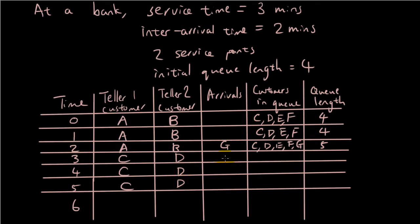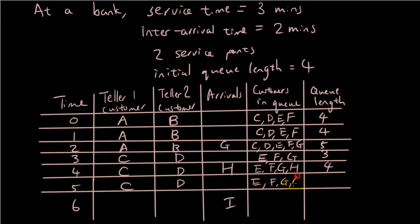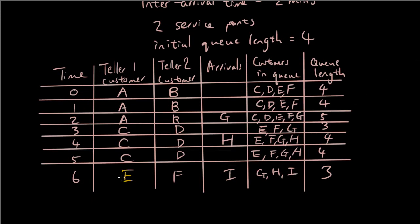And then let's do the arrival — so every two minutes someone arrives. So G arrives, H will arrive on the fourth minute, and then on the sixth minute I will arrive. So C and D are now being served, so that means only E, F and G are in the queue — that's three in the queue. Then E, F, G, H are in the queue, so back to four people. And then E, F, G, H are still in the queue. And then once D is done, customer E is being served, customer F is being served, so now we have G, H, I — three people in the queue. And so on — you can keep going with that.